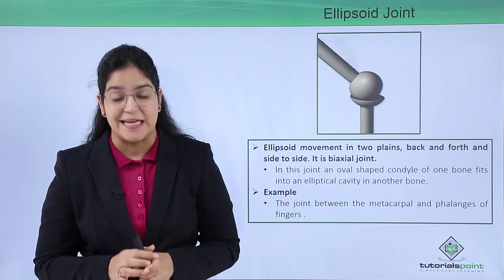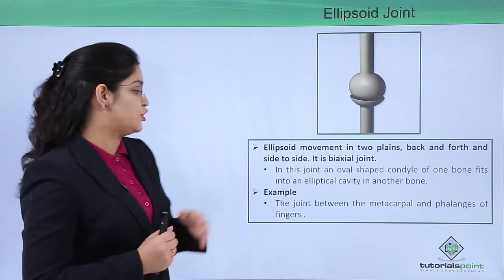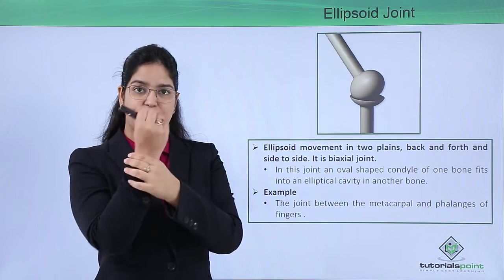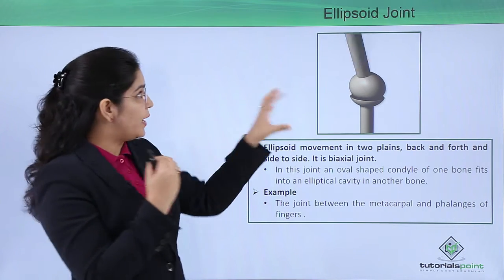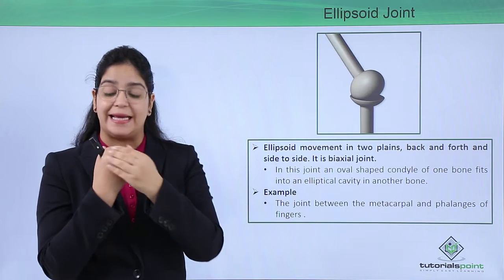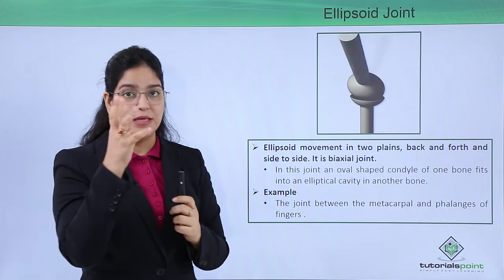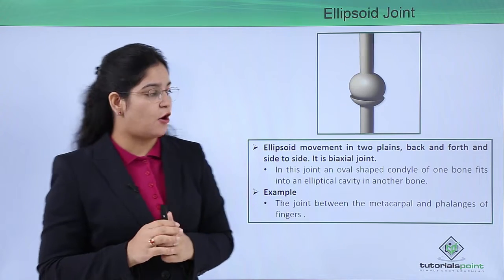side to side. The best example of this joint is the metacarpal. We know this part is carpal, this is our metacarpal. So where is this ellipsoid joint present? In our metacarpal and in the fingers, in the phalanges of